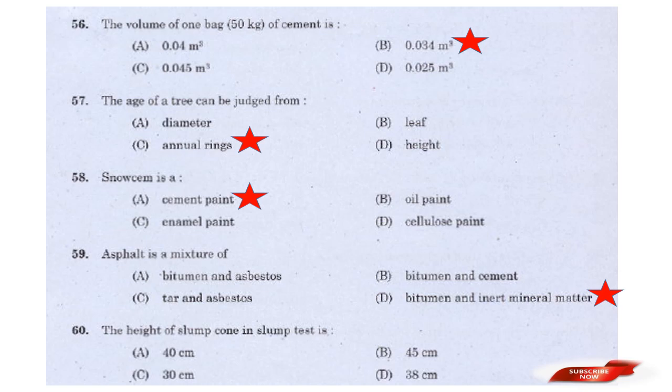Question: The height of the slump cone in a slump test is — options: 40 cm, 45 cm, 30 cm, 38 cm. Answer: Option C — 30 cm.